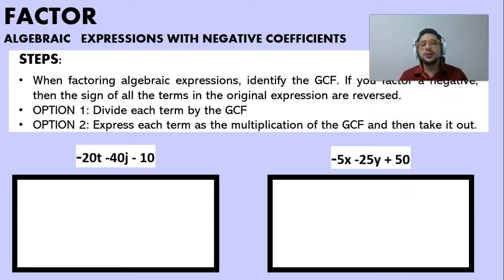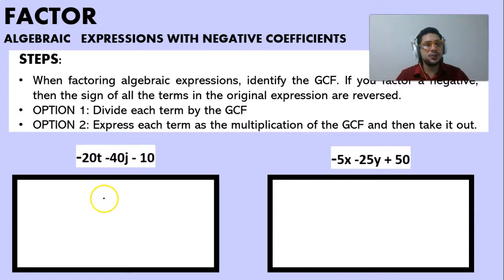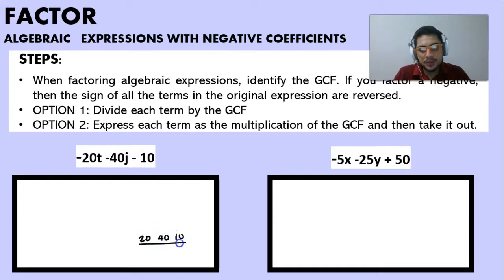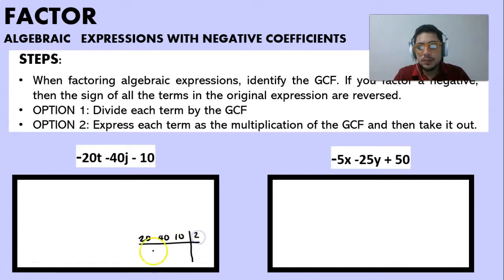In the first problem we have minus 20T, minus 40J, minus 10 — they are all negative, so we're going to have a negative common factor. We have 20, 40, and 10. To get the greatest common factor, we can divide them all by 2: 20 divided by 2 is 10, 40 divided by 2 is 20, and 10 divided by 2 is 5.